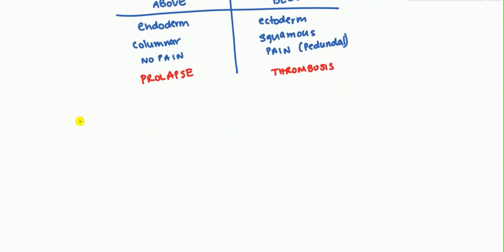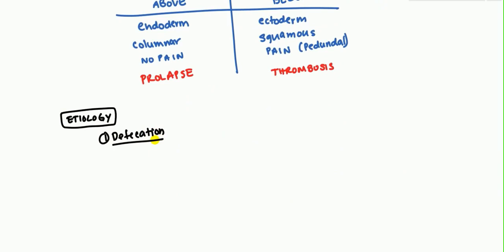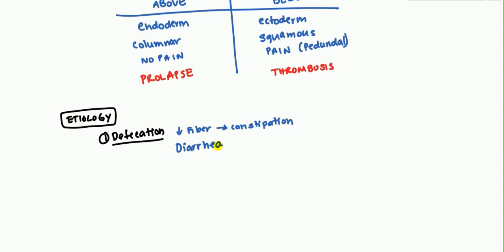Now we'll discuss the etiology of hemorrhoids. The first cause is related to defecation. Patients who have low fiber diets tend to become constipated, and when constipated they strain very heavily, leading to increased abdominal pressure which can engorge the veins of the anal canal. Constant diarrhea can also agitate the walls of the anal canal and lead to this type of venous engorgement.